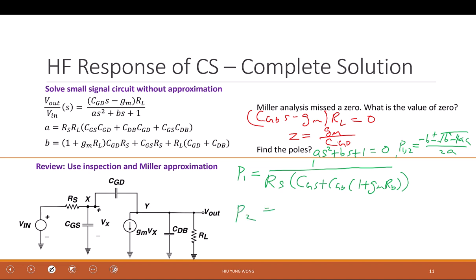And P2 equals to 1 over, in this case it's RL parallel R0 times CDB plus CGD times 1 plus 1 over gm.